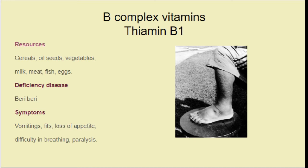Let us discuss water-soluble vitamins in detail, starting with B complex vitamins. The first one is thiamine, scientific name thiamine, also called B1. The resources are cereals, seeds, vegetables, milk, meat, fish, and eggs. Whenever we take these food items, B complex vitamins are automatically supplied to our body. Deficiency of thiamine leads to a serious disease. The symptoms are vomiting, loss of appetite, difficulty in breathing, paralysis, and pain in the legs.